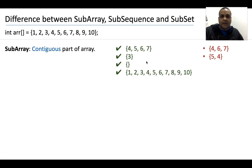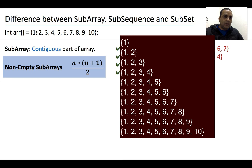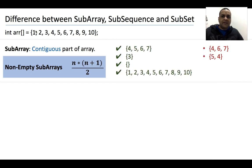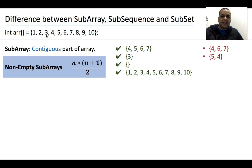If there are n elements in the original array, the total number of subarrays possible will be n*(n+1)/2 + 1, where n*(n+1)/2 is the number of non-empty subarrays. You can think of it this way: subarrays starting from 1 — there will be 10 subarrays starting from 1: {1}, {1,2}, {1,2,3}, {1,2,3,4}, and so on. Similarly, there are 9 subarrays starting from 2, 8 starting from 3, 7 starting from 4, and so on. The total comes out to be the summation from 1 to n, which is n*(n+1)/2. This counts non-empty subarrays.